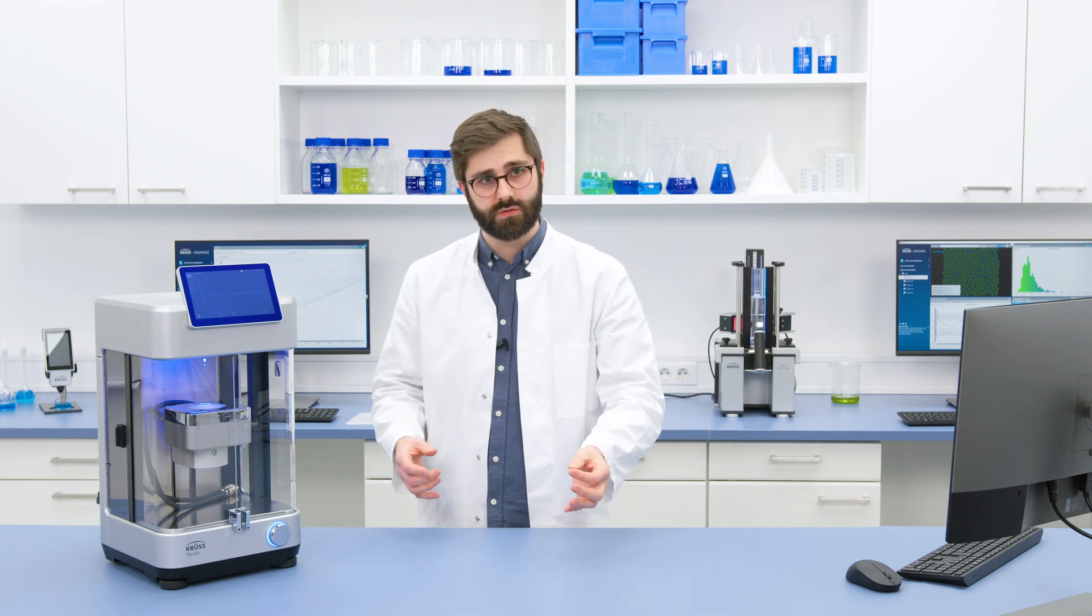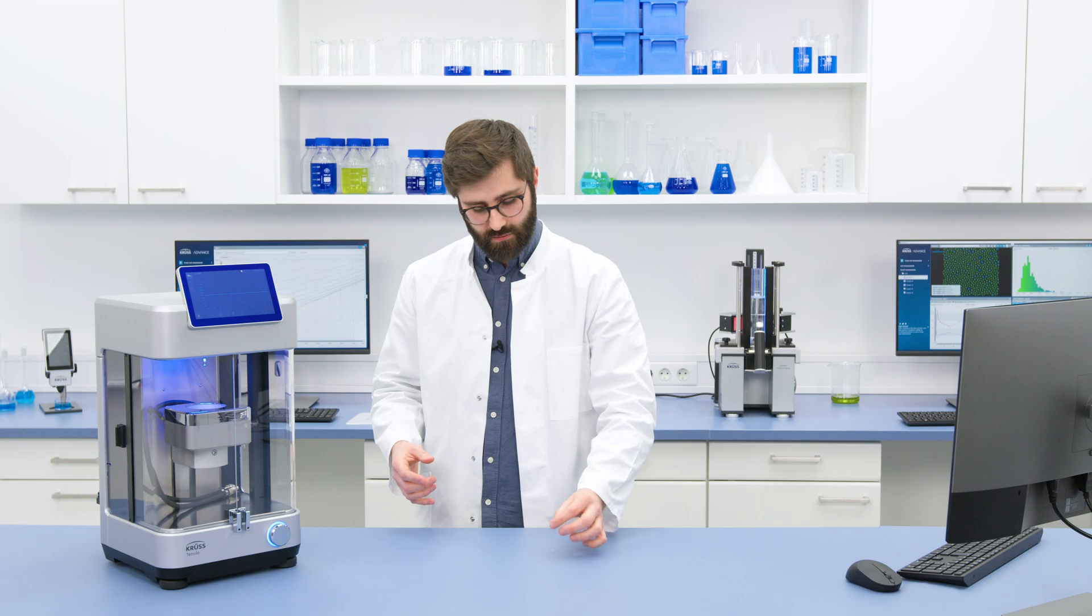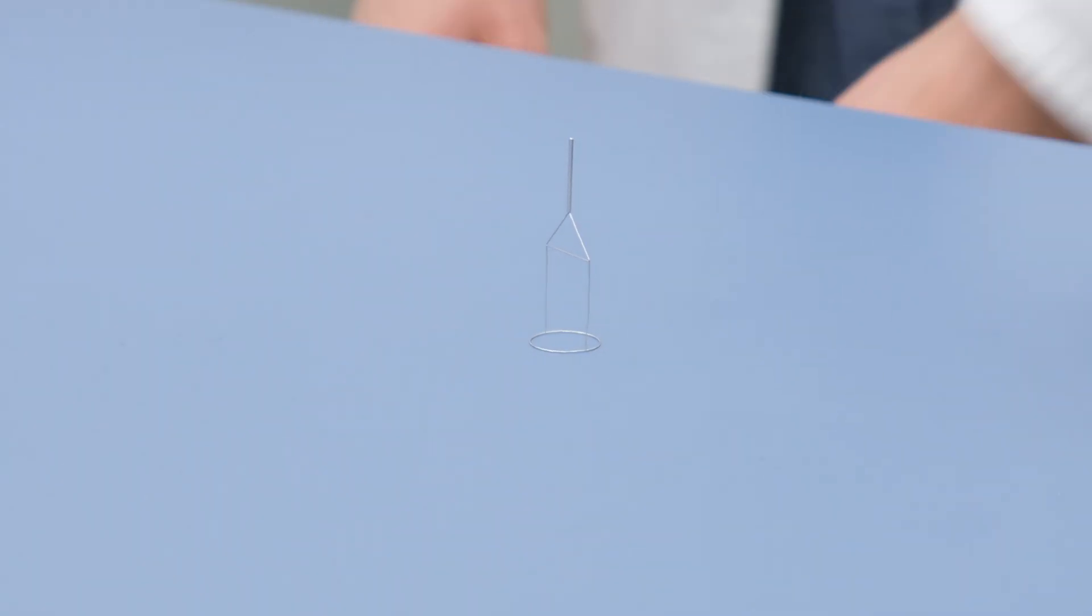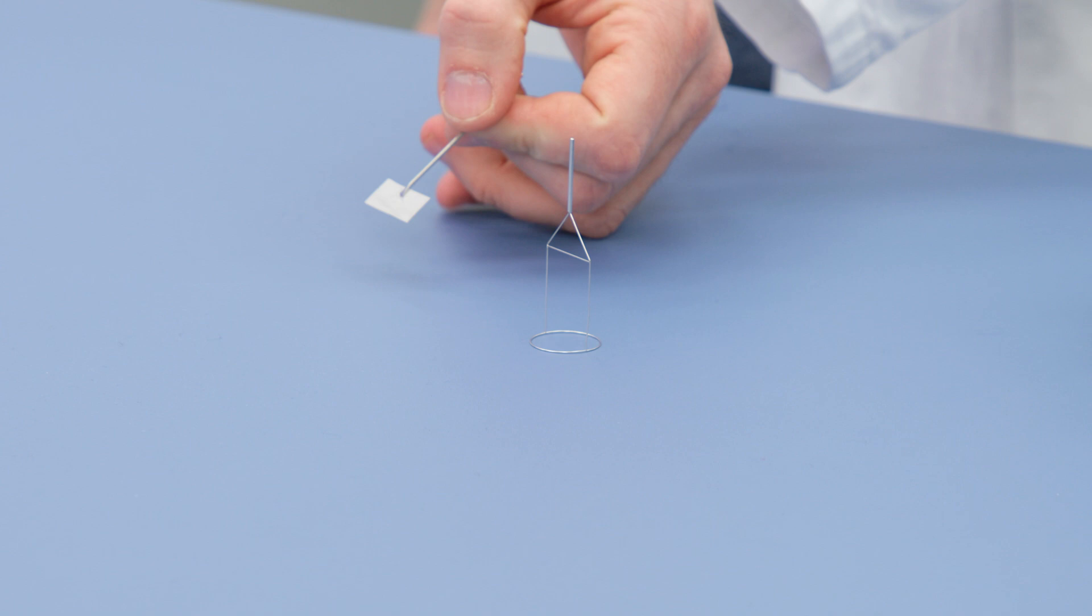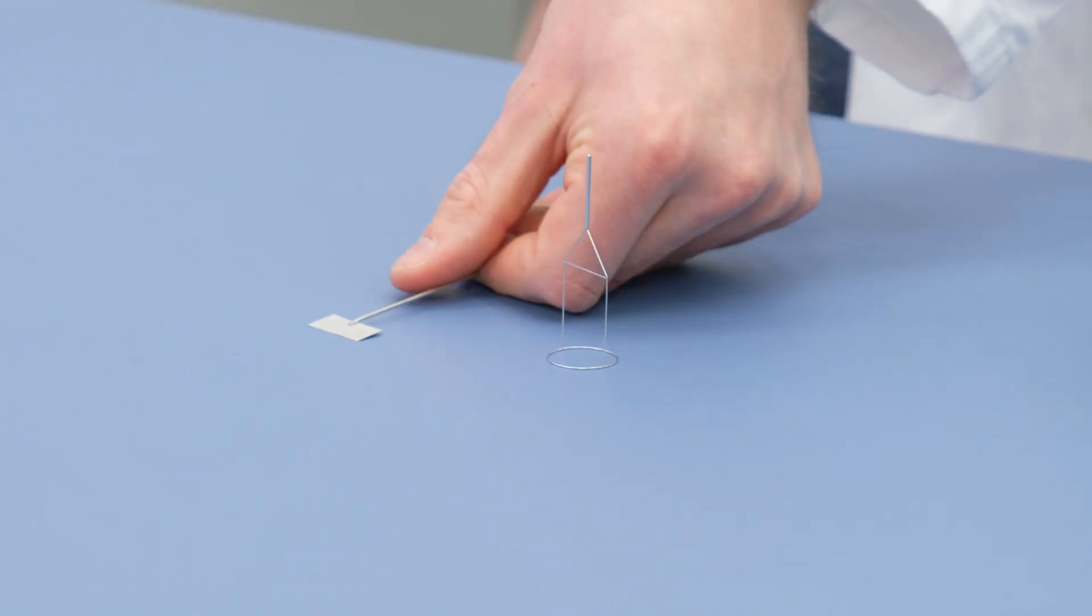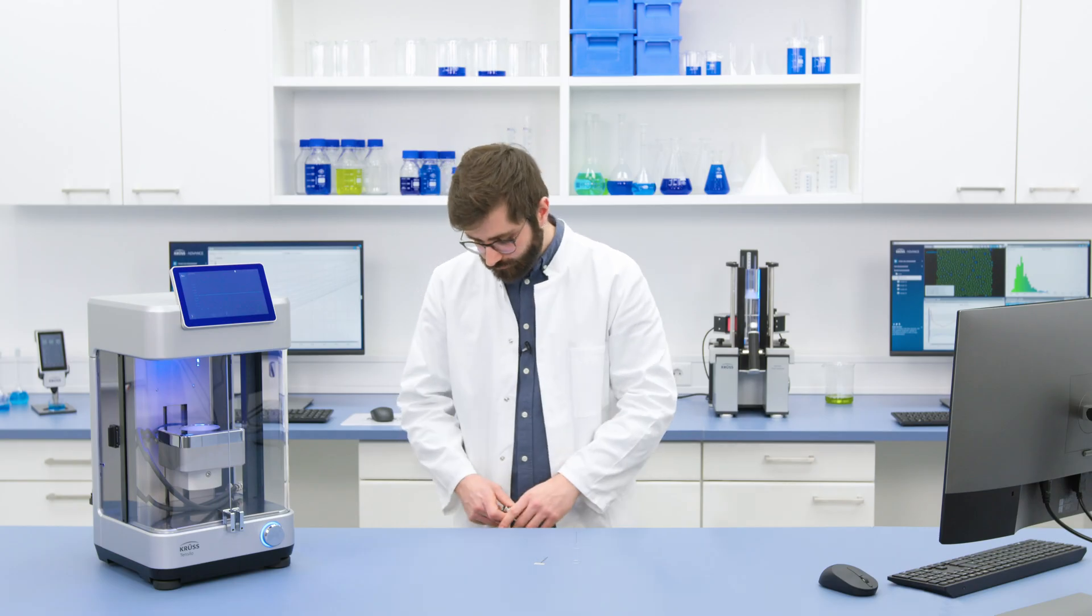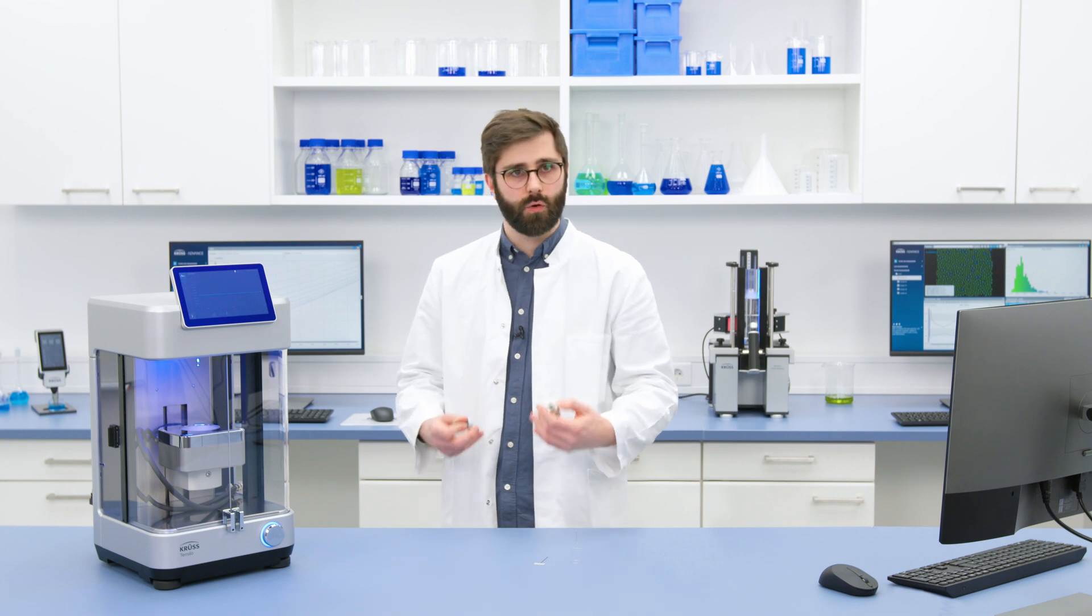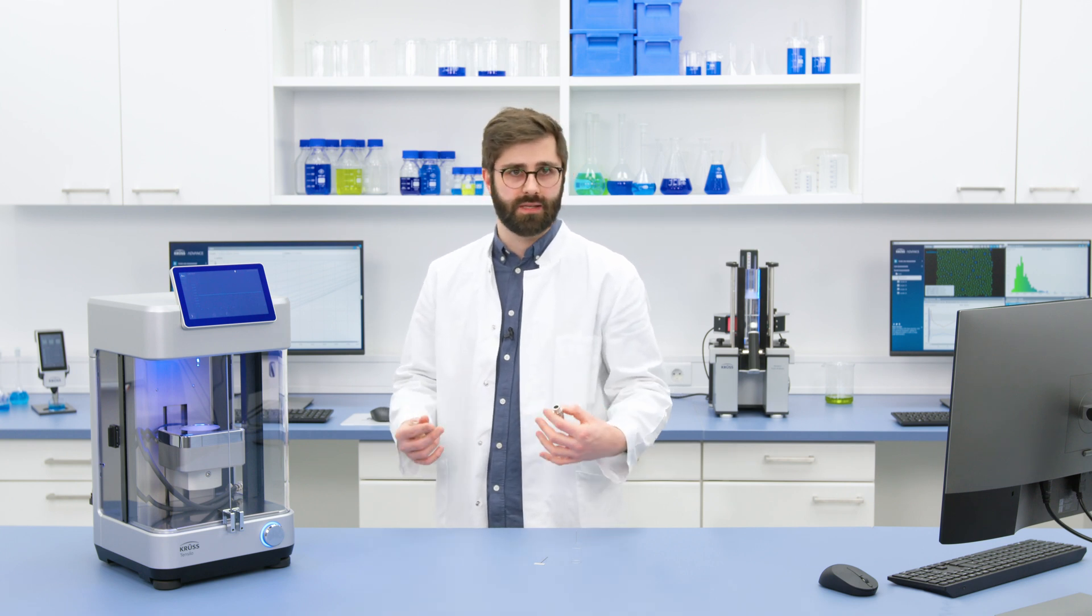This is the typical Denoy ring that will be used for measuring surface tension, or we can switch to the Wilhelmy plate, or I can also use Tensio to characterize not just liquids but solids.